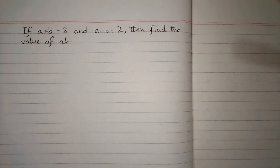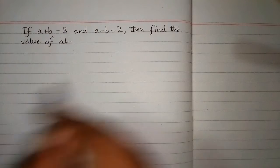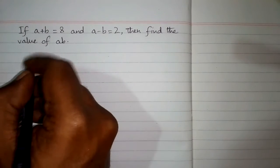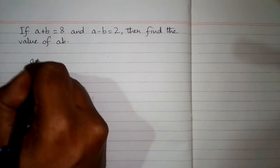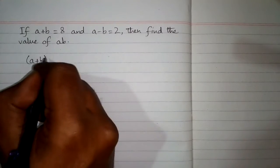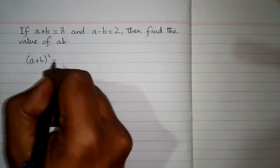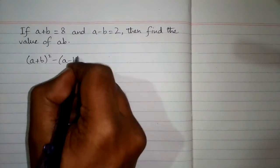If a plus b is equal to 8 and a minus b is equal to 2, then find the value of ab. We will use the algebraic identities for a plus b whole square and a minus b whole square, and we will subtract these identities.